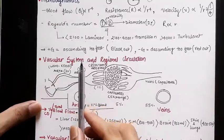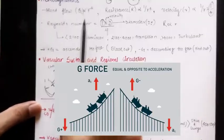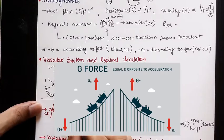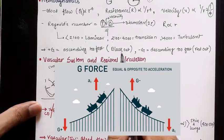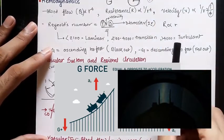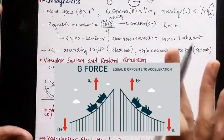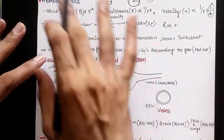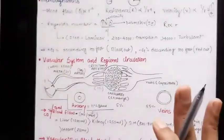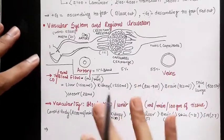Similarly, if we are ascending very rapidly in the upward direction, there will be positive G-force on our eyes and that will cause blackout. If we are descending too fast, there will be negative G-force and there will be redout of the vision. That covers hemodynamics.